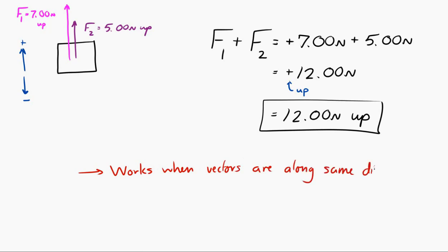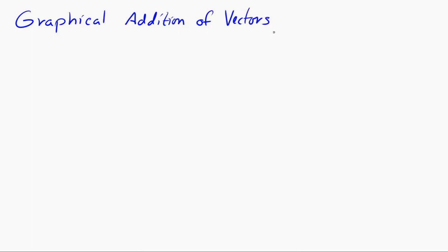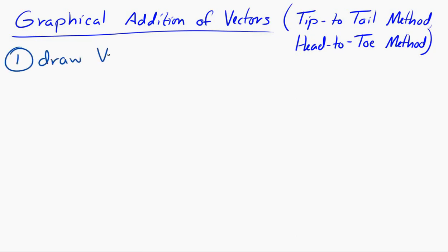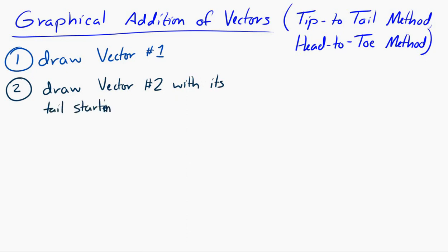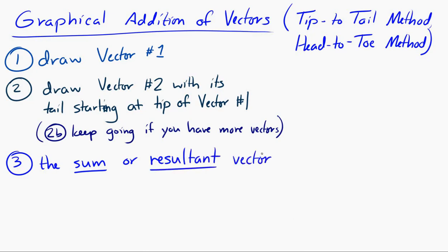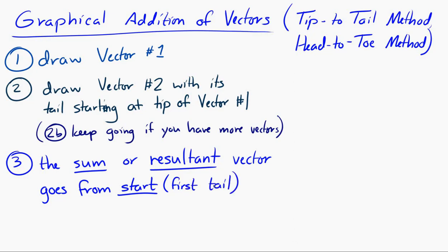How do you add vectors in two dimensions? Before we get to that, let's take a look at vectors from a graphical perspective rather than an algebraic perspective — let's draw pictures of vectors being added instead of worrying about numbers. To do this, we're going to use something called the tip-to-tail method, also called the head-to-toe method. You first draw the first vector. Next, you draw the second vector with its tail starting at the tip of the first vector. Don't change the direction of either vector. If you have more vectors, keep adding them to the previous vector's tip. The resultant vector — the sum — goes from the very first tail to the very last tip.